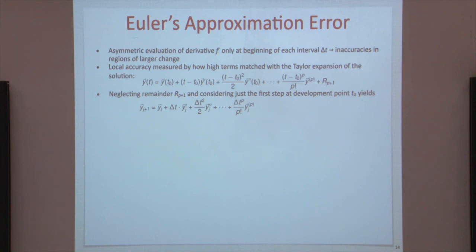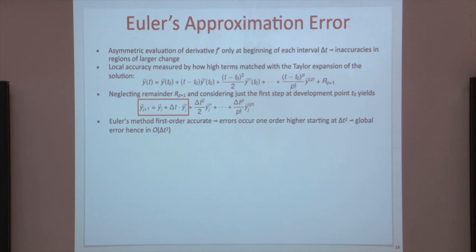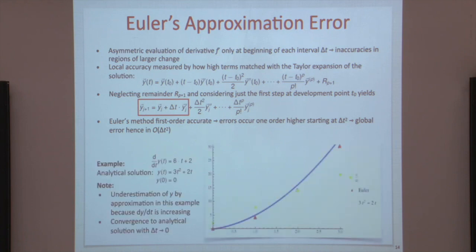If we look at a Taylor expansion and neglect higher-order terms, we see that Euler's expansion captures only the first few terms. Everything else is the error, and of course that error will become larger and larger. The error is hence on the order of delta t squared.